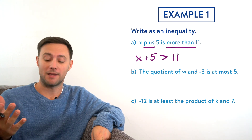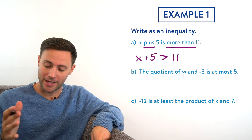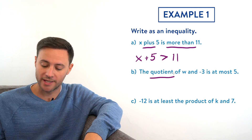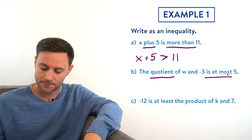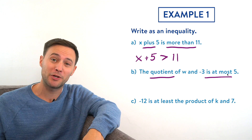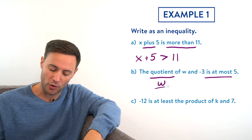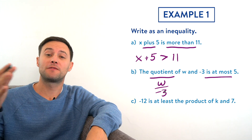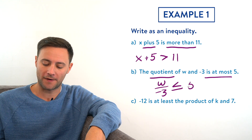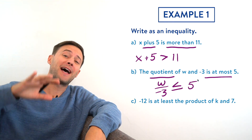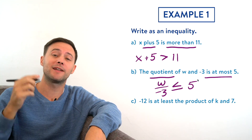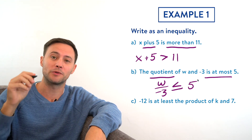Part b: 'The quotient of w and negative three is at most five.' The keywords are 'quotient' and 'is at most.' Quotient means the answer to a division problem, so we write w divided by negative three. 'Is at most five' means it has to be less than or equal to five — it could equal five but it could also be less than it. So w / -3 ≤ 5.